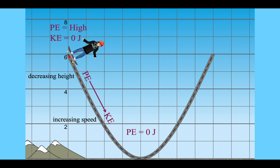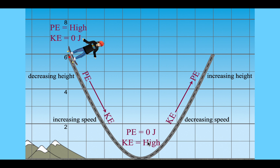At the bottom there's no potential because there's no height, and all of the energy has been converted to kinetic. Back up the other side, kinetic is converted into potential because speed is decreasing and height is increasing. At the top on the other side, we have the same situation — all potential and no kinetic. As the skater skates back and forth, energy converts back and forth between kinetic and potential.